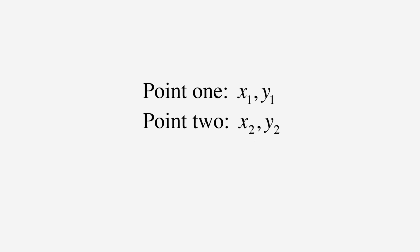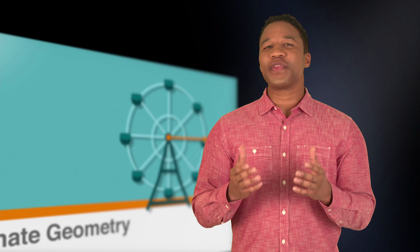We start with two points, which are referred to as x1y1 and x2y2. The distance between these points is equal to the square root of x2 minus x1 squared plus y2 minus y1 squared. Now that we know the distance formula, let's use it on an ACT question that involves a circle drawn on the coordinate plane.